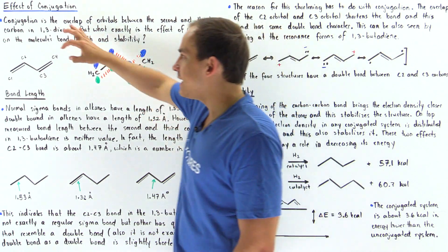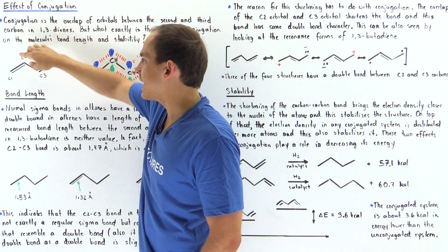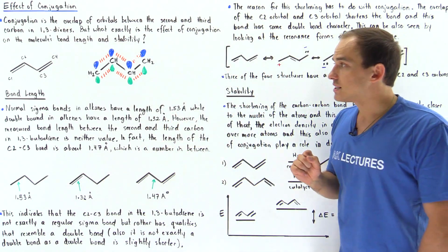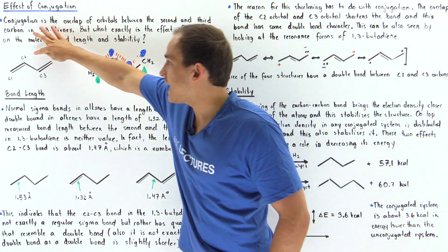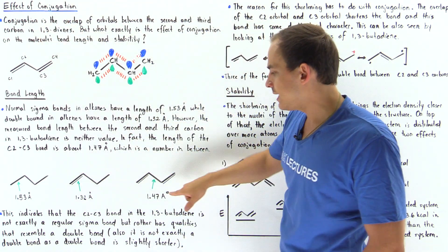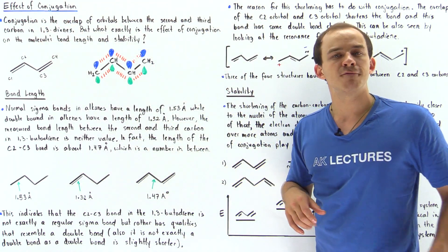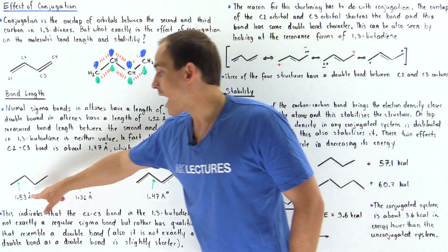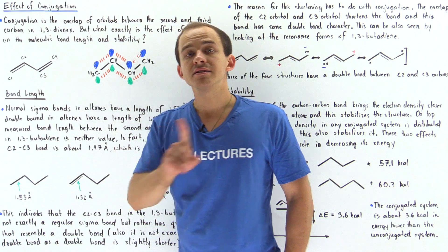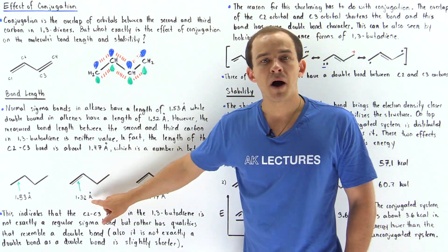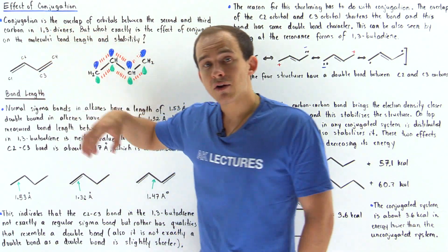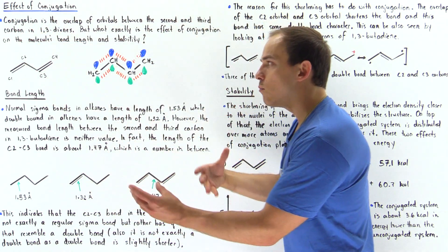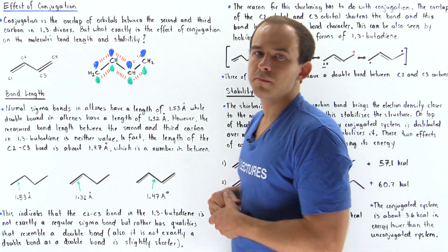The question is: what is the bond length between the second and third carbon? Experimentally, we measure that the bond length between C2 and C3 in 1,3-dienes is about 1.47 angstroms. So it's slightly less than our single bond but slightly more than the pi bond, meaning the characteristics of this bond lie somewhere in between a single and a double bond.